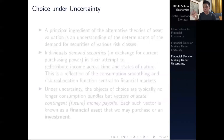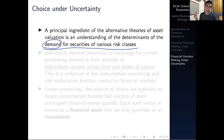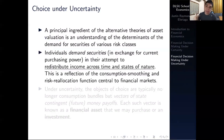So let's talk about choice under uncertainty. A principal ingredient of the alternative theories of asset valuation is an understanding of the determinants of the demand for securities of various risk classes. Demand has something to do with how we price and value securities. Why do people demand financial securities in the first place? Individuals demand securities in exchange for current purchasing power — we spend our current purchasing power to purchase financial securities in an attempt to smooth out consumption over time, redistributing income across time and across different states of nature.